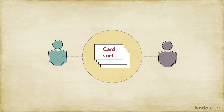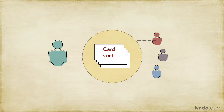I suggest that you start by doing card sorts one-on-one with your participant. In other words, you sit and watch as one participant completes the sort. This allows you to really focus on the groupings they create and listen to their justifications. Once you've run and analyzed a few sessions this way, you might decide to do sorts with a group of two or three participants working together. A group will probably talk more between themselves, which can be useful information, but can also be too hard to follow when you're just starting out.